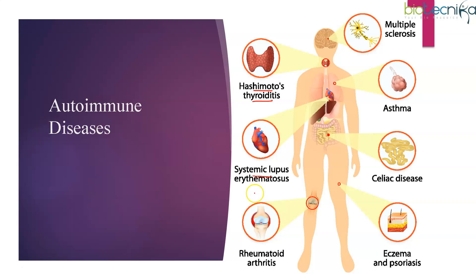In SLE, the immune system can attack DNA, histones, and RNA. Rheumatoid arthritis is a chronic inflammatory disorder where the joints — including hands and feet — are affected. Autoantibodies bind to antibodies present in these joints, leading to rheumatoid arthritis. Multiple sclerosis is another autoimmune disorder where the immune system damages the protective covering of nerves, affecting the nervous system.